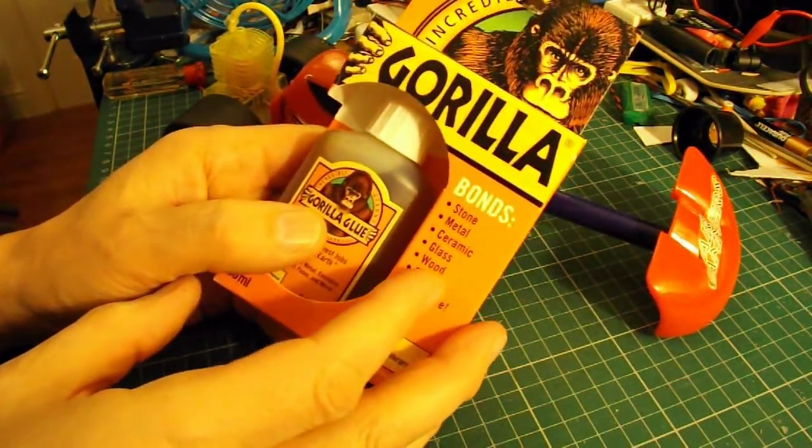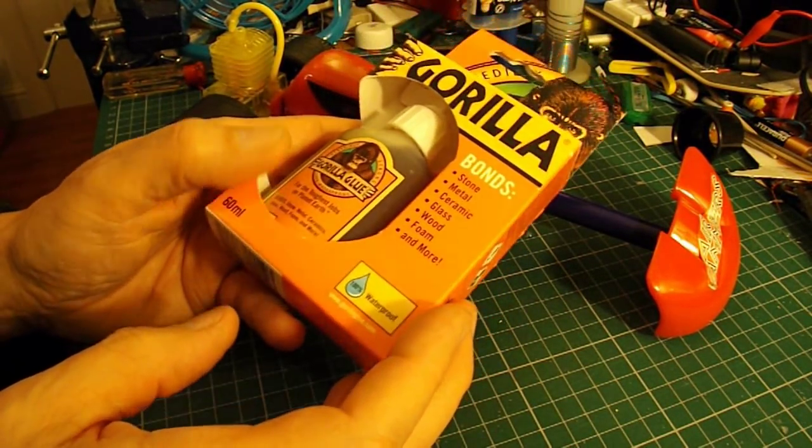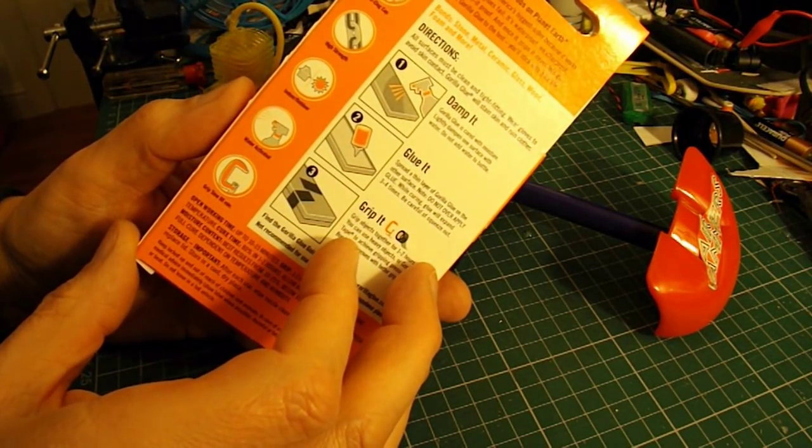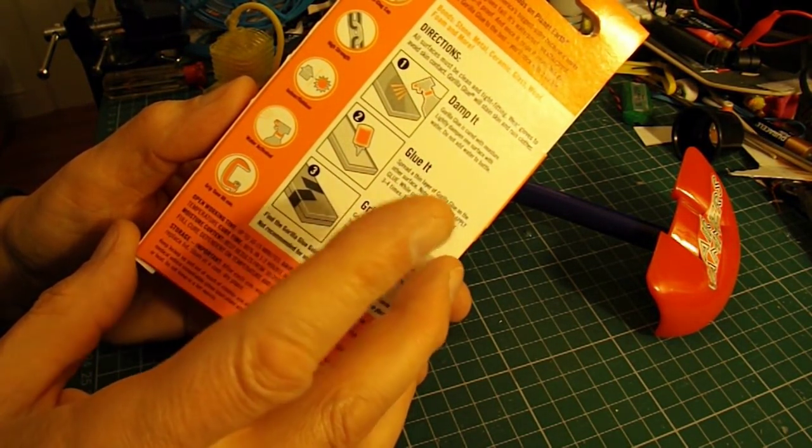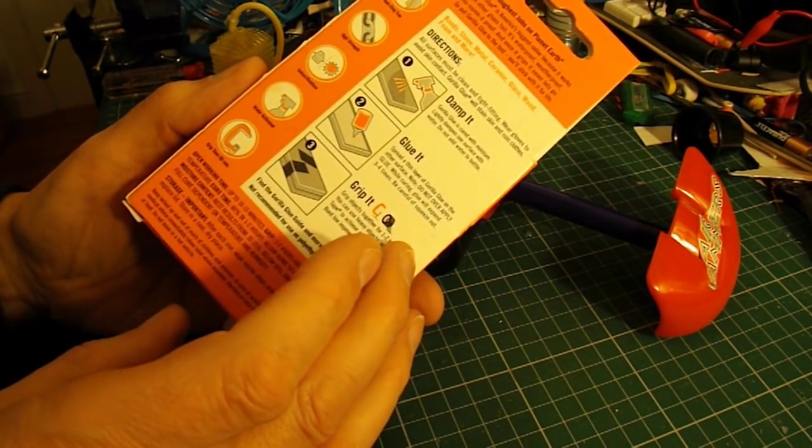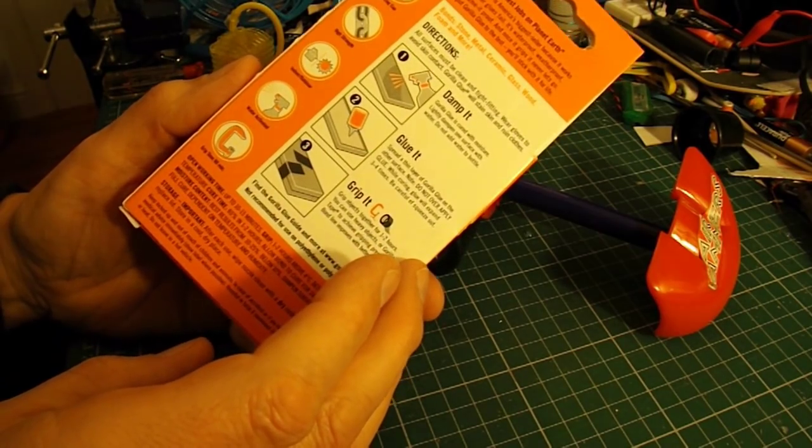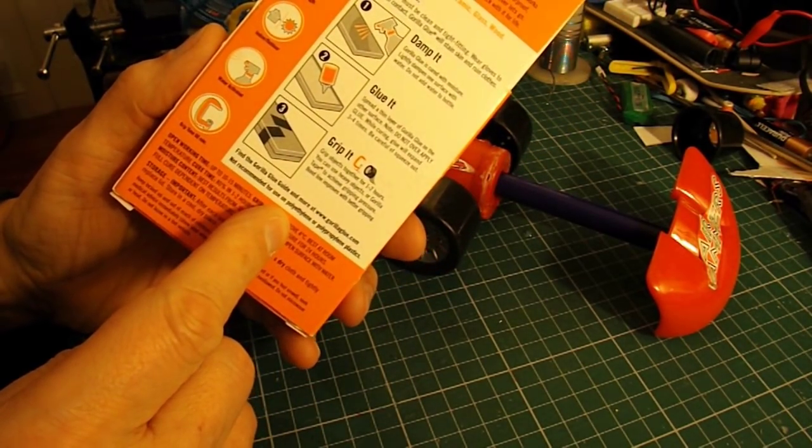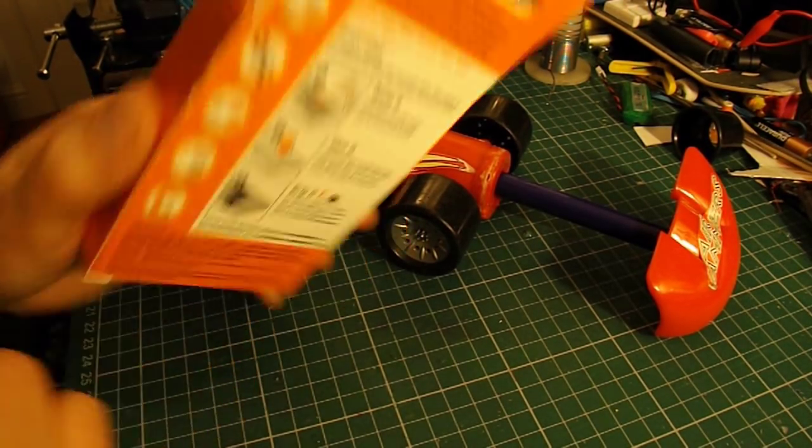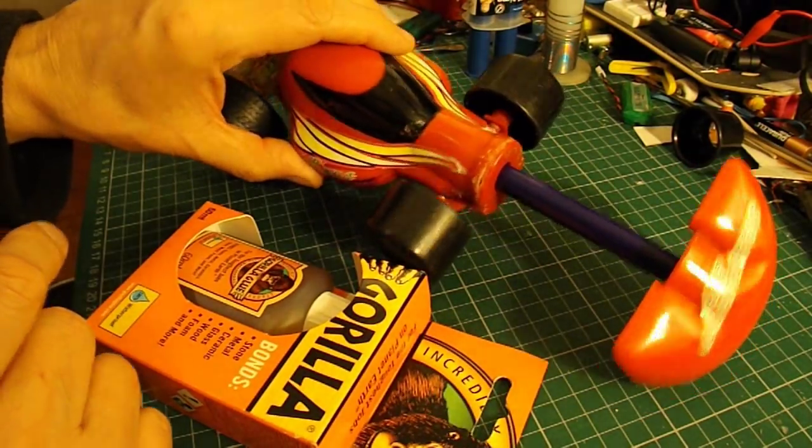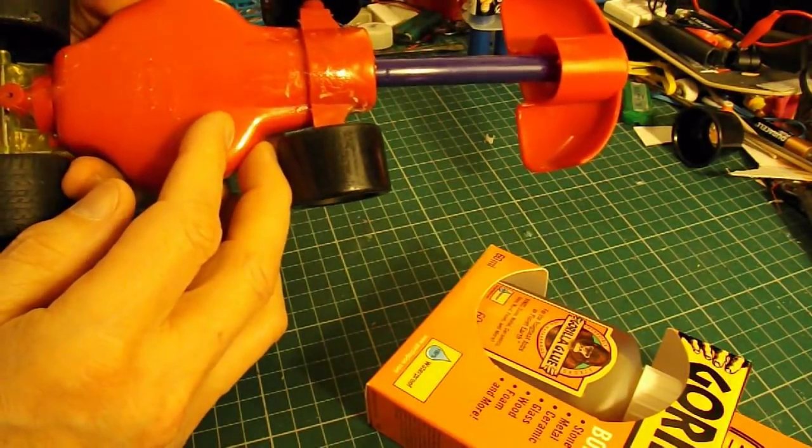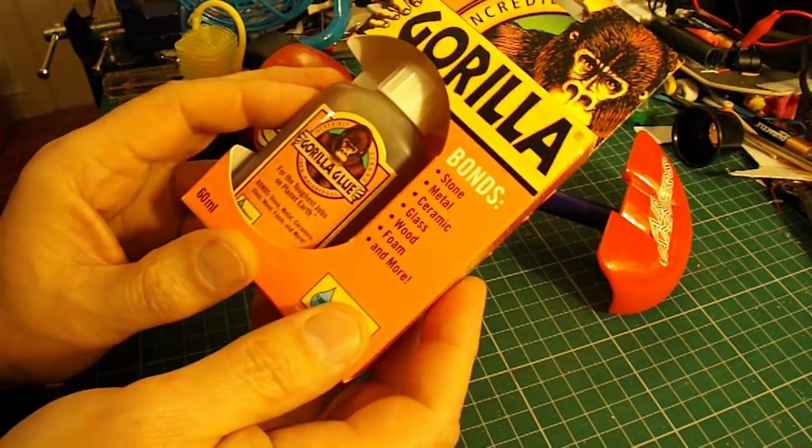Today I've bought some of this Gorilla Glue. Now I've been quite keen to try this for a long time. It seems to get good reviews. The only problem is that it's not recommended for polyethylene or polypropylene plastics. I don't know what sort of plastic this is made of. It's quite a hard plastic, but we'll give it a try regardless.